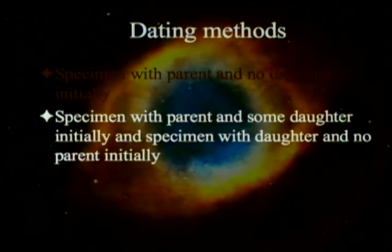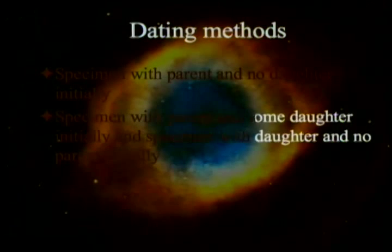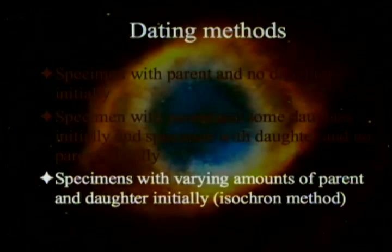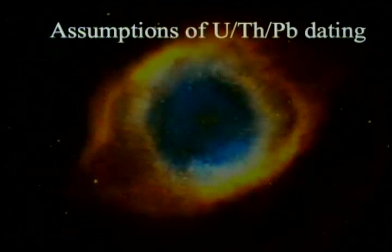Perhaps there's a specimen with parent and some daughter initially, and a specimen with daughter and no parent, so you can figure out the original isotope ratio and how much extra lead-208 there is at the end. But it is rare to have specimens with daughter and no parent, so what is actually done is measuring specimens with varying amounts of parent and daughter. You do mathematical calculations — that's called isochron dating because all of those are supposed to lie on a straight line. The book Scientific Theology, available on the internet for free, goes into isochron dating in considerable detail.